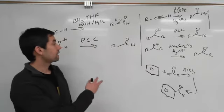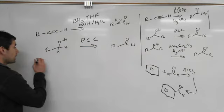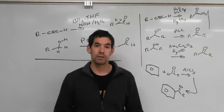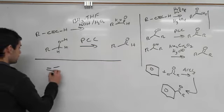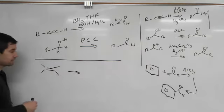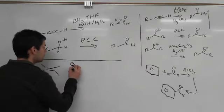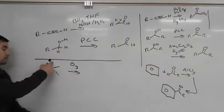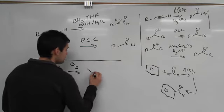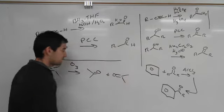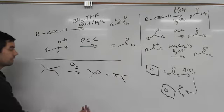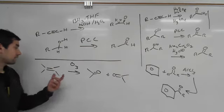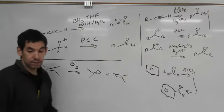Those are some methods to make aldehydes and ketones. There are seven reactions we've covered that get us into a ketone or an aldehyde. One more method that can give either an aldehyde or a ketone depending on the structure of your starting material is ozonolysis — reacting an alkene with O3, which gives oxidative cleavage. We can get an aldehyde or a ketone depending on the substitution pattern of the alkene.